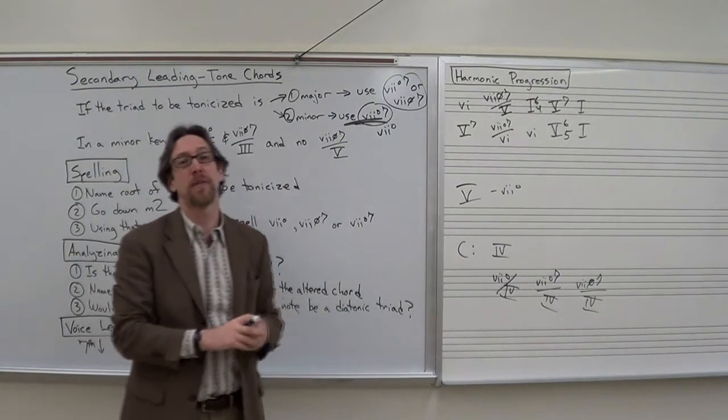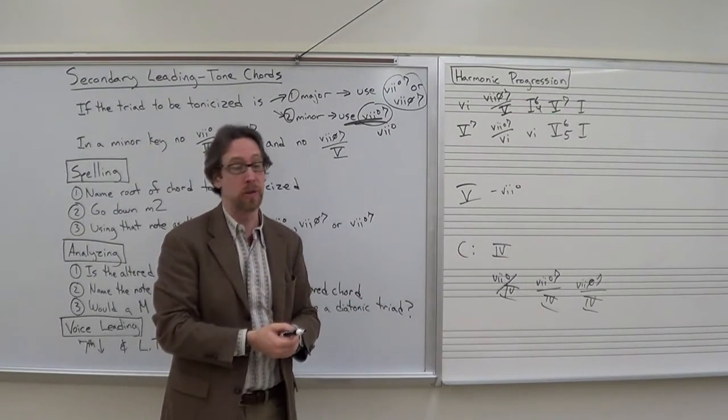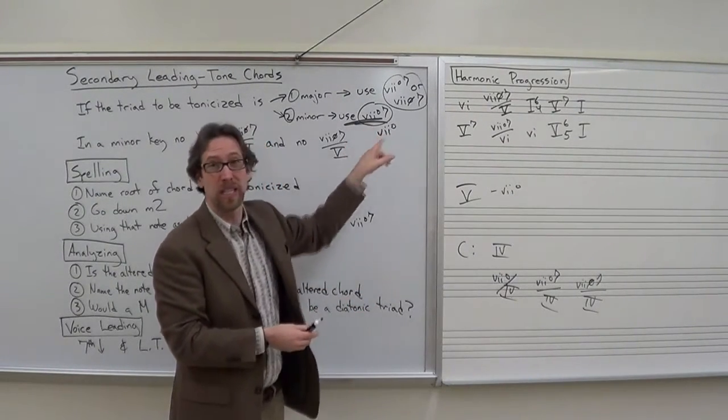When you are tonicizing and using a 7th chord, the half diminished 7 can only be used if the chord being tonicized is a major triad. That said, the fully diminished 7th chord is actually a lot more common in tonal music. That's the one you're going to see the most.